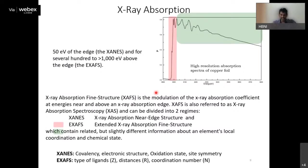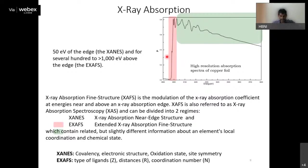Looking at the detail of the X-ray absorption spectrum, which spans about 1000 eV, we can divide it into three regions: the pre-edge region, the XANES region near the absorption edge (roughly within 50 eV of the edge), and the EXAFS region extending about 1000 eV beyond the edge. From XANES and EXAFS one can obtain complementary structural information in slightly different ways.